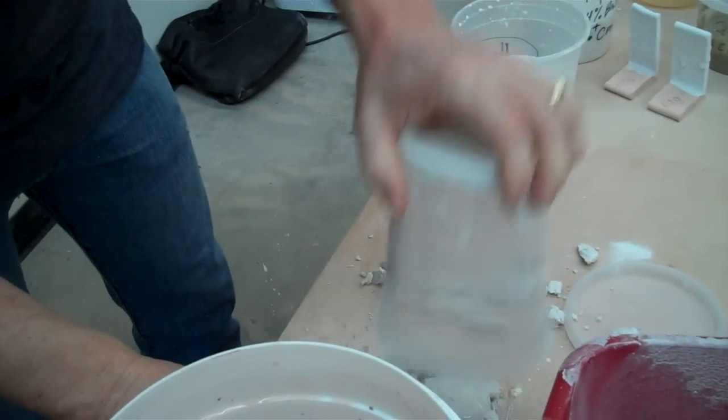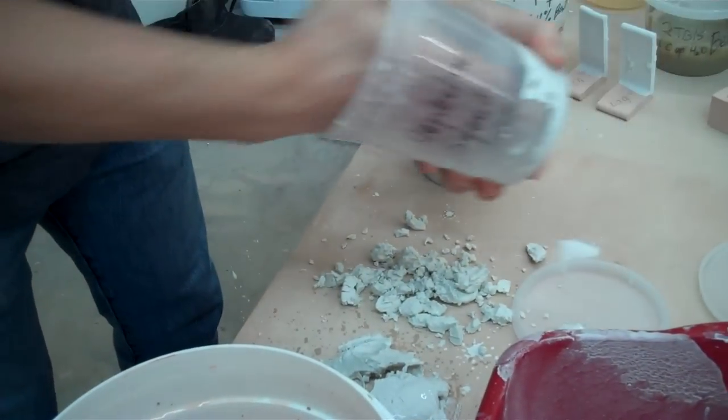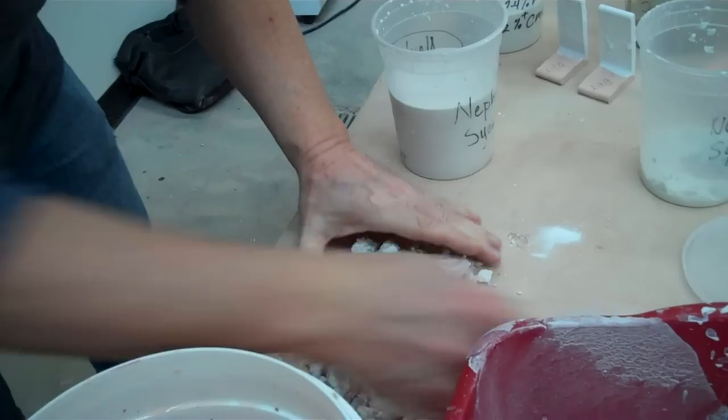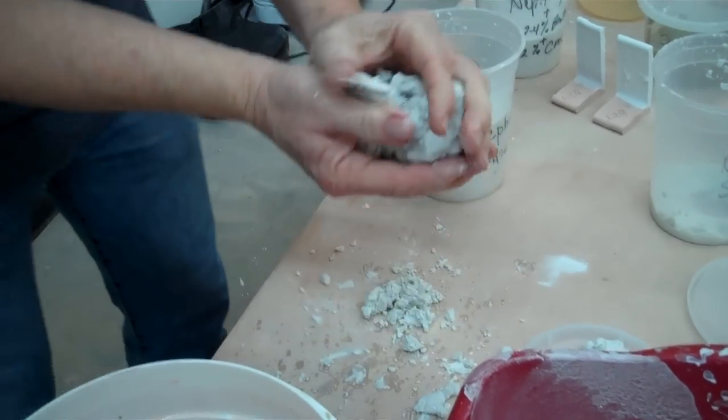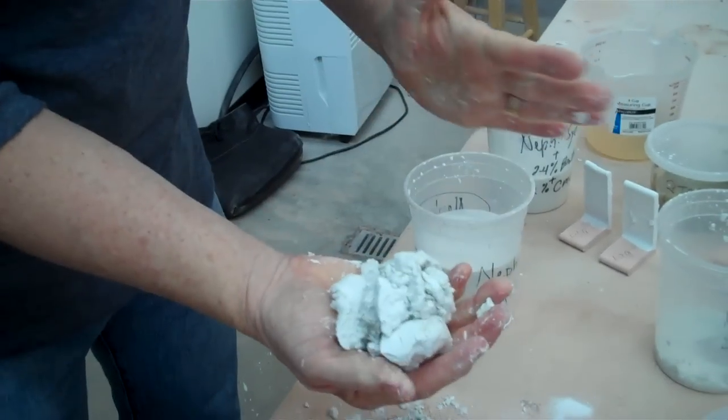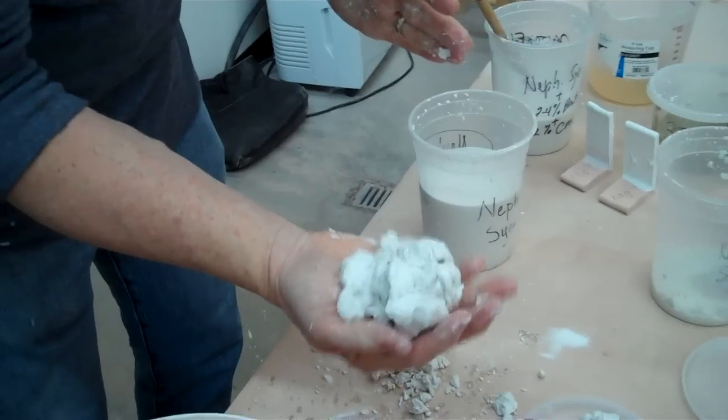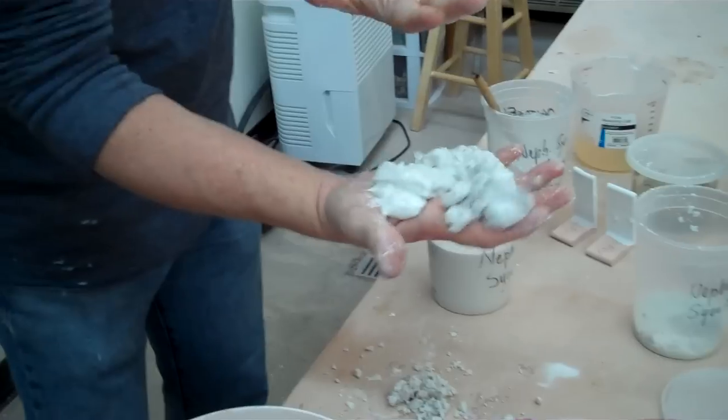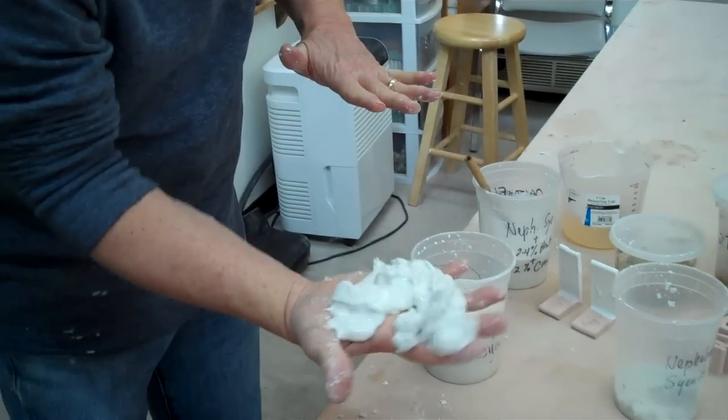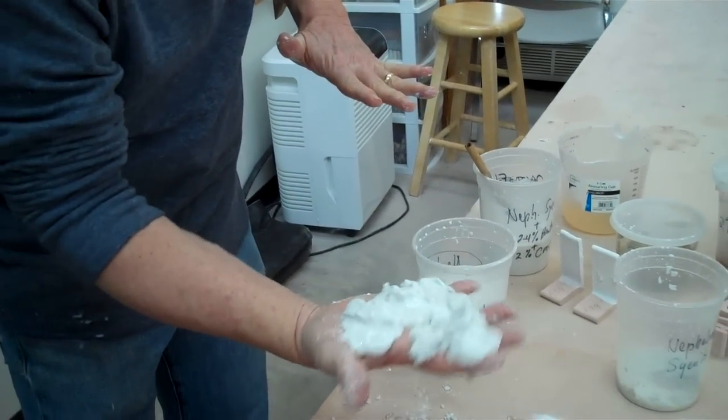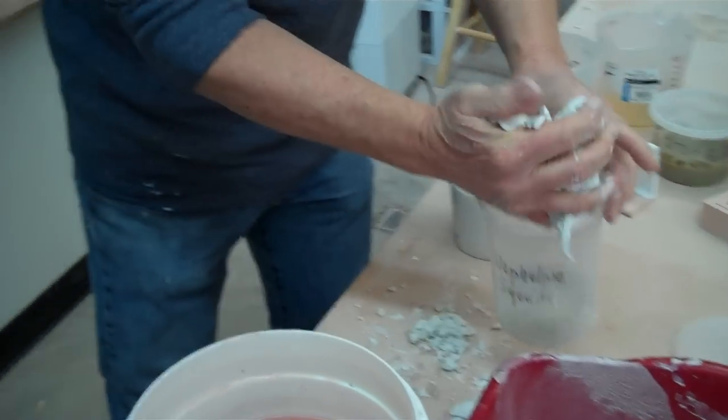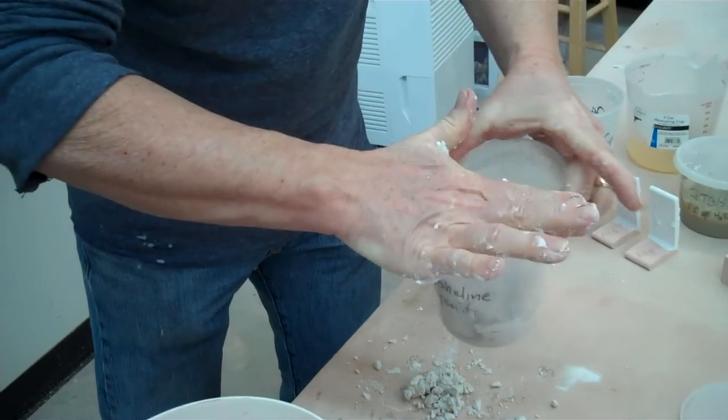Now I'm going to show you another quality of this material. It's called thixotropic. So do you see how hard and crunchy this is? But then if you vibrate it like this, it's called shear stress. It will start to move and it'll turn into a fluid. So see, that is a characteristic of this material.